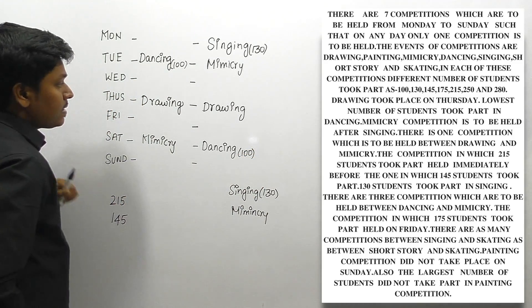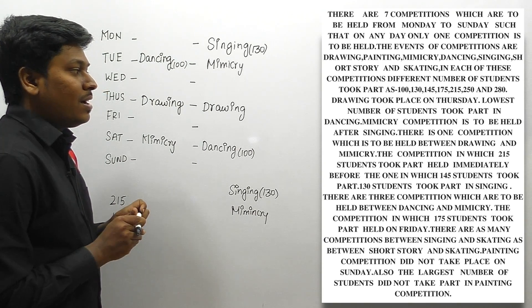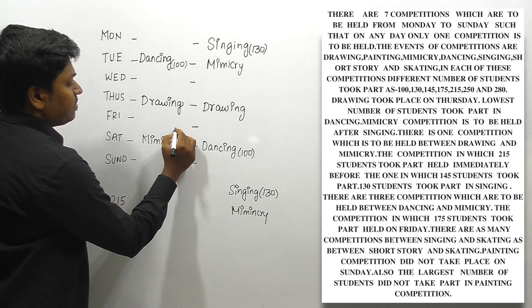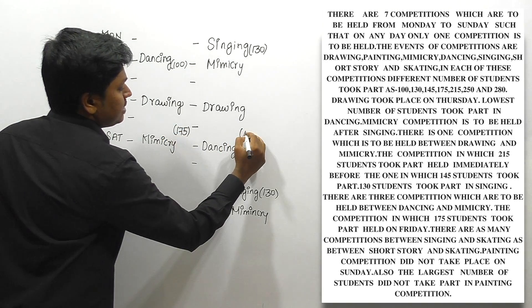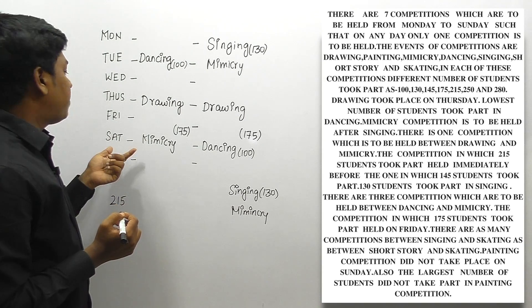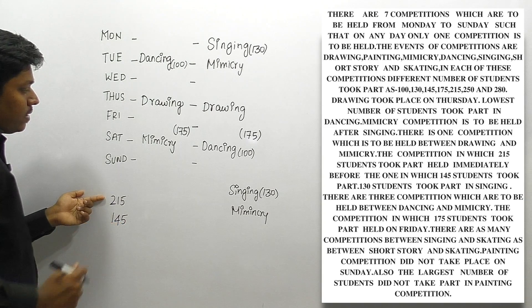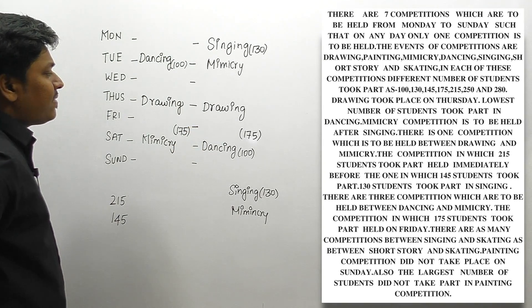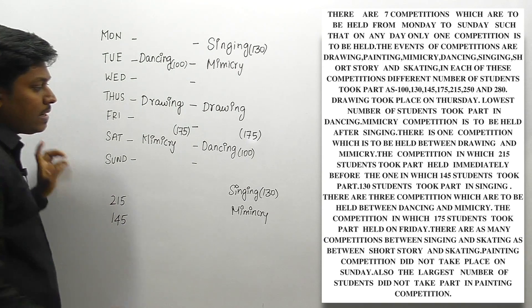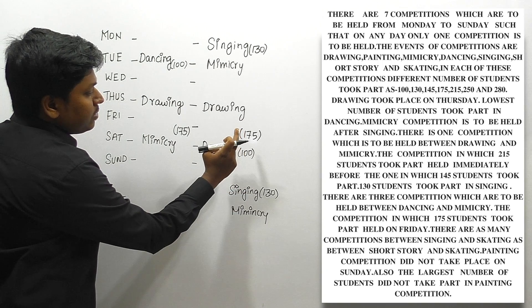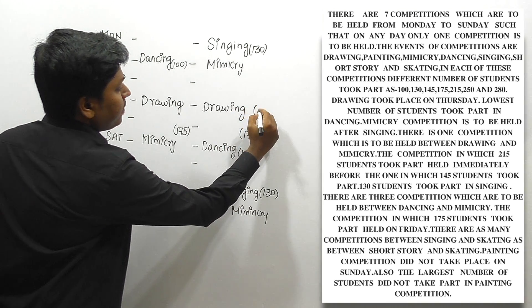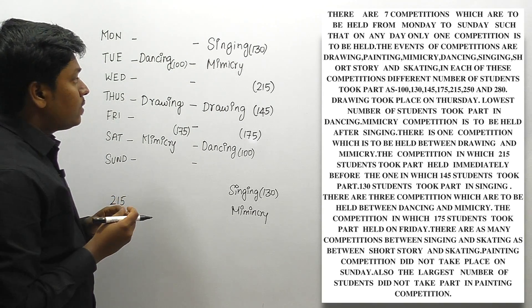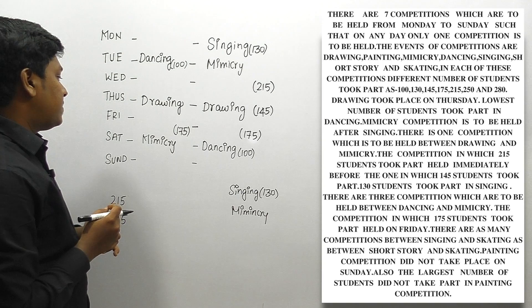Next clue: the competition in which 175 students took part was held on Friday, so Friday is assigned 175 students. For the 145 placement: immediately above 145 must be 215. We can't place 145 in certain positions, so the only possibility is that 145 belongs to drawing, with 215 immediately preceding it. In condition two there are more possible placements.